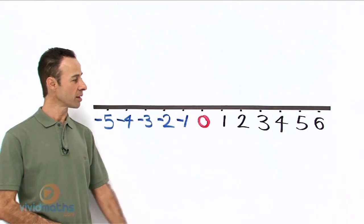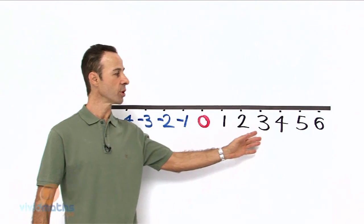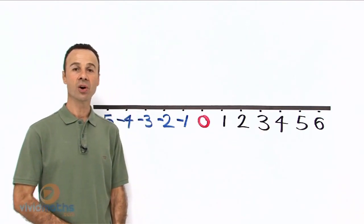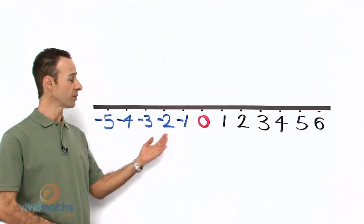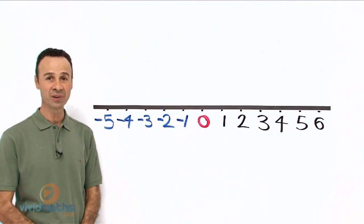Right in the middle of it, right at the pivot here is zero. To the right are positive numbers 1, 2, 3 all the way up to 6, and on the left we have negative numbers with a little minus in front of each number. That is how we refer to negative numbers.